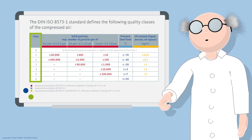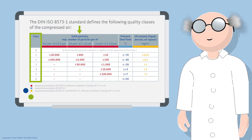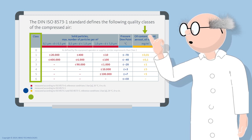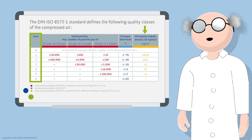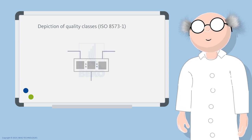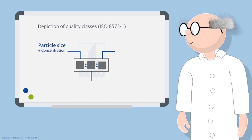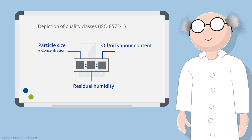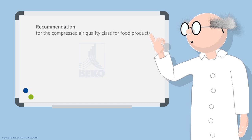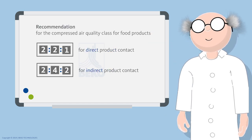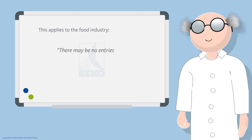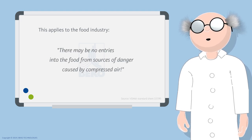The standard ISO 8573 stands for the quality requirements for compressed air and specifies the maximum content of solid particles, air humidity, and residual oil or oil vapor that may be contained in the respective classes. The quality classes for compressed air are indicated by three digits: the first digit stands for the particle size, the second for the residual humidity, and the third for the oil or oil vapor content. Depending on the required quality class, appropriate treatment of the compressed air is necessary — there may be no entries into the food from sources of danger by compressed air.